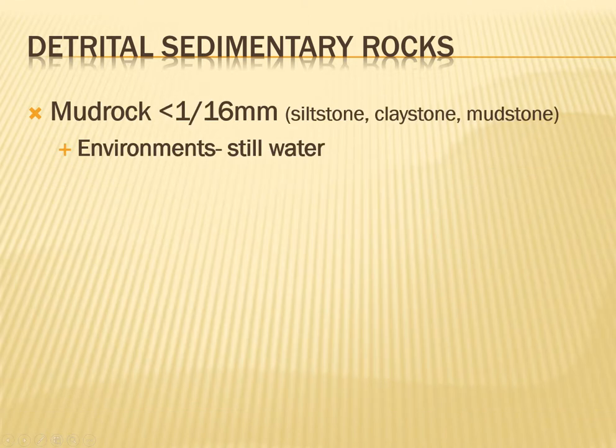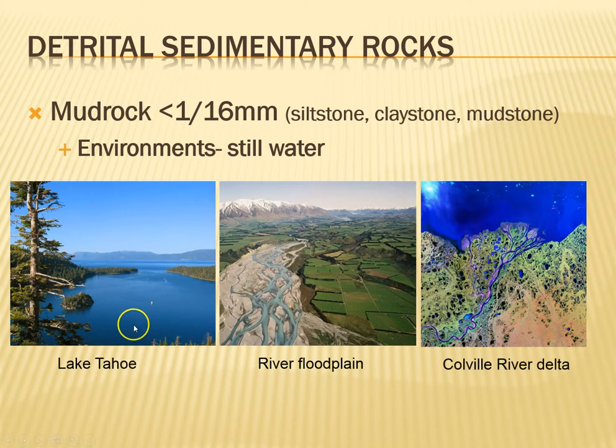Starting at the very bottom of our scale we have mud rock — the very smallest stuff — including siltstone, claystone, mudstone, and shale. The key is that these form in environments where the water is really still, because these are really fine sediments that make water very muddy. For that mud to settle out and deposit, the water has to be very still or only very slightly moving. Examples include lakes.